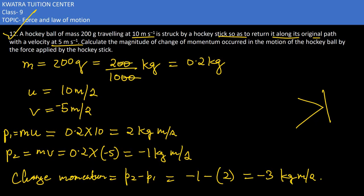And what does this negative sign show? That change in momentum is in the direction opposite to the direction of initial momentum of the ball.